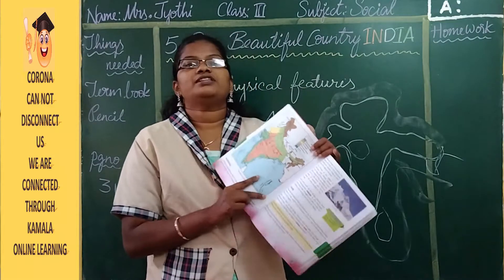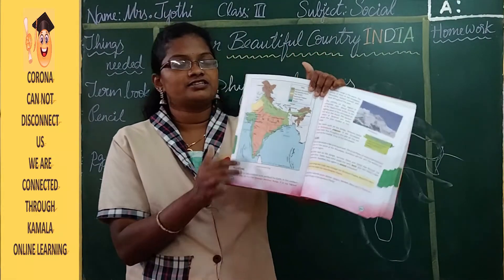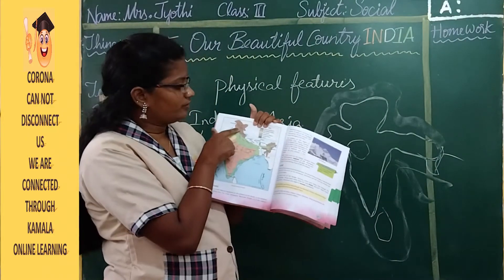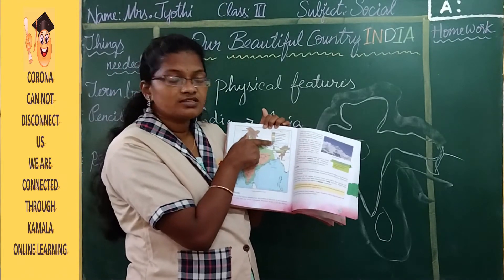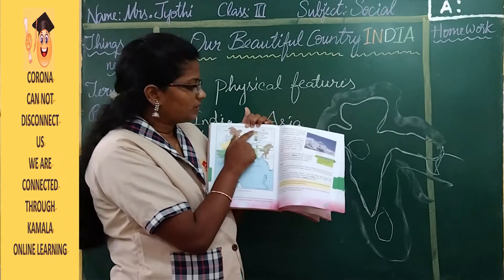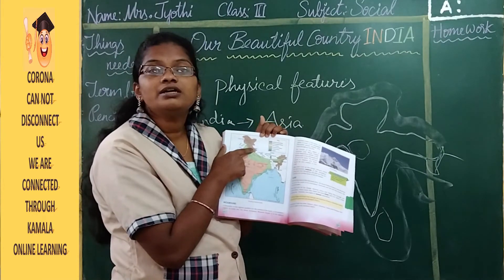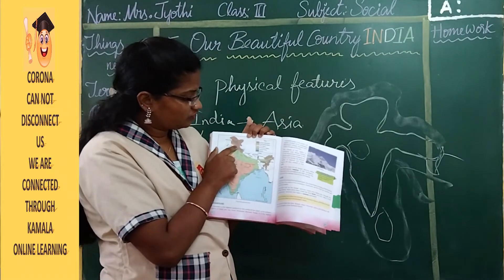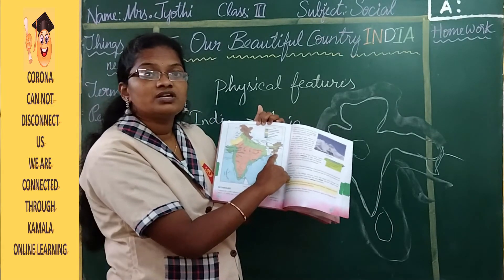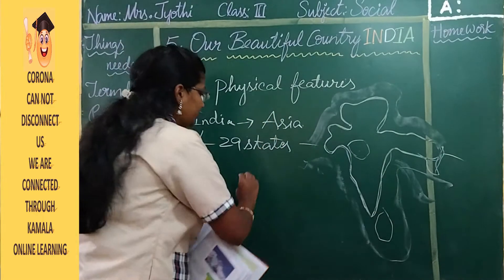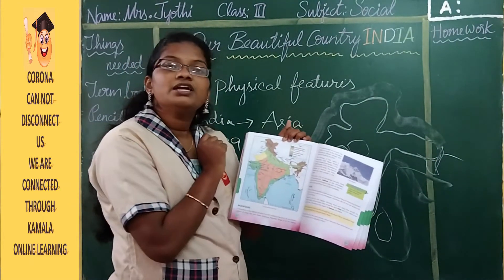Here you can see the map of India, and the complete map is colored with different colors. On the top you can see brown color. Now in the legend box you can see different colors. Where is brown color? It is on the top. What does the brown color represent? Northern mountains. That means in this place you can see mountains - the highest mountains are wherever there is brown color. In these particular places you can see the northern mountains, which look like this.